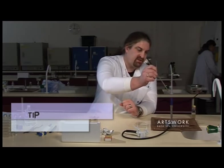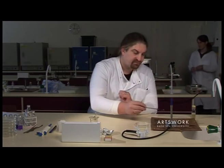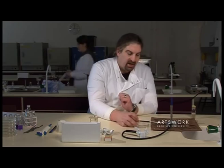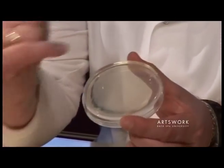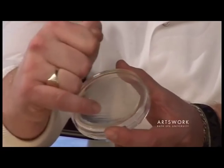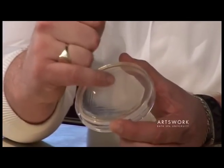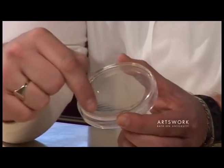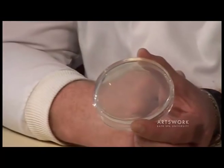Sterilize your loop for the final time, and that's your streak plate. Once you've incubated it, you should see individual bacterial colonies towards the end of your streaks. In effect, you're diluting out your culture as you streak it around the agar plate.